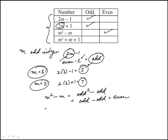Or you could say 3 square minus 3, 9 minus 3 is 6.